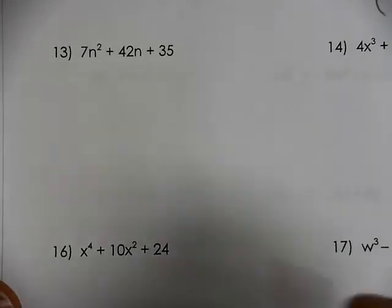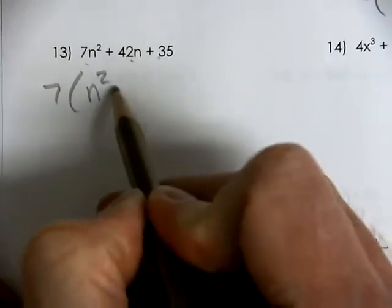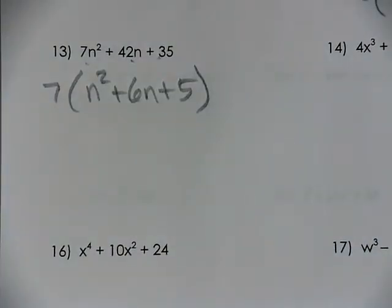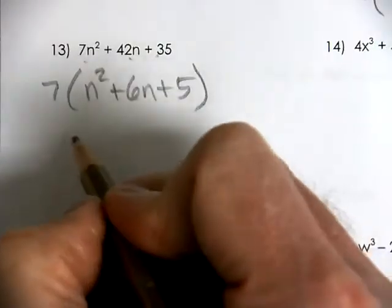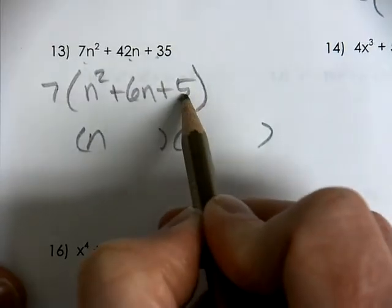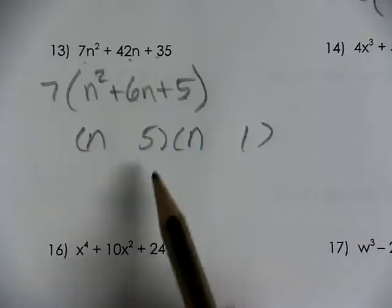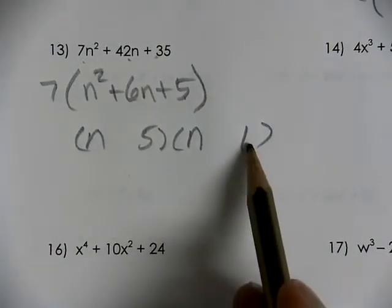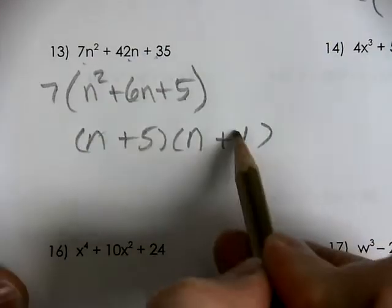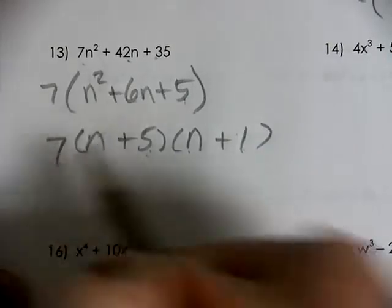Number 13 also has a GCF. All terms are divisible by 7, so factor that out first. Then factor the remaining trinomial: two numbers that multiply to be 5 and add to be 6 — that has to be 5 and 1. It doesn't matter which parentheses the 5 goes in. Both have to be positive to make 6 and then multiply to be 5. Don't forget your 7 out in front.